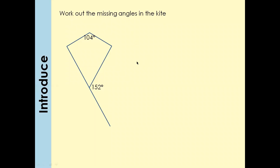In the kite, we want to find this angle, this angle, and this angle. Take a minute and then we'll mark it. Looking at the solution: that outer angle is 152°, which is on a straight line, so the adjacent angle is 180° − 152° = 28°.